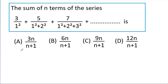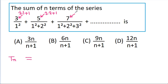The general term tn: the numerator of the first term is 3, which is 2 times 1 plus 1. The second term has 5, which is 2 times 2 plus 1, and 7 is 2 times 3 plus 1. So the nth term numerator will be 2n plus 1.